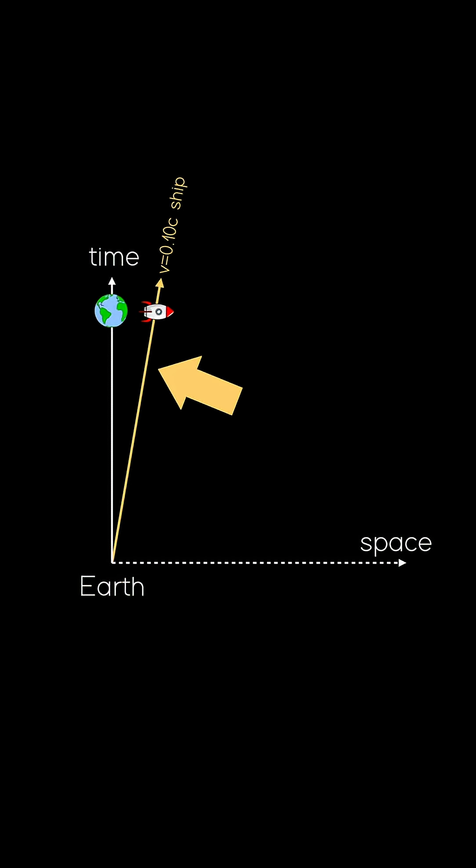The ship's path through space-time is known as its world line, and the angle between its line and that of the reference frame, here the Earth, is the arc tangent of the velocity over c. So here, that gives 80 degrees as depicted.